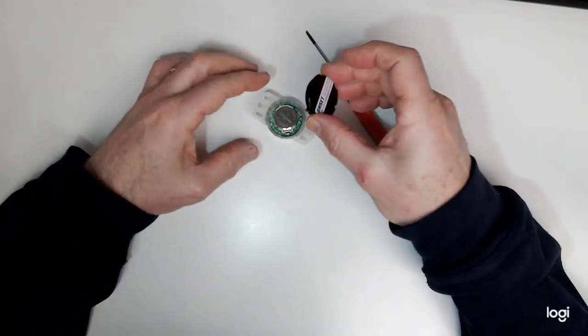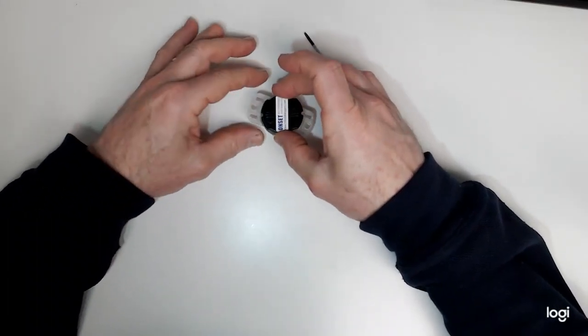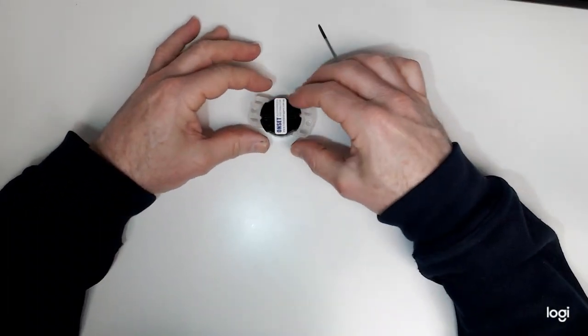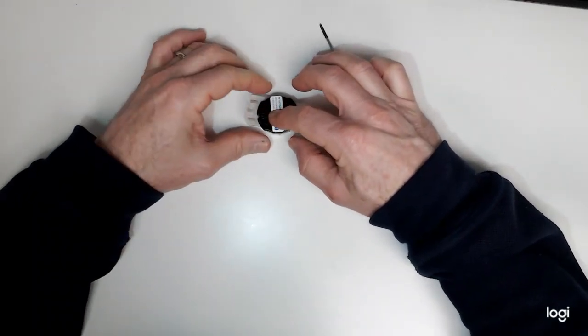When you pop that back on, you'll see the tabs line up with the little recesses there. Just push down - you'll feel the pressure of the seal.